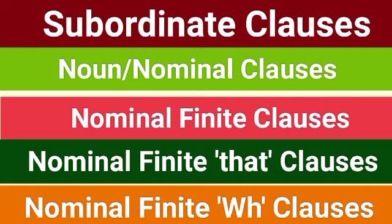Hello friends and welcome back. In this video we're going to talk about one of the types of subordinate clauses, that is noun clause. Let us try to understand what a subordinate clause is first. We have discussed subordinate clauses in the last video. Subordinate clauses are clauses that are attached to independent clauses. They do not convey complete meaning unless they are attached to independent clauses. They are also called dependent clauses.